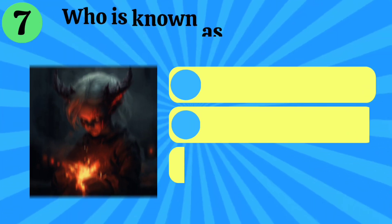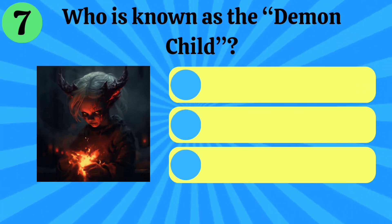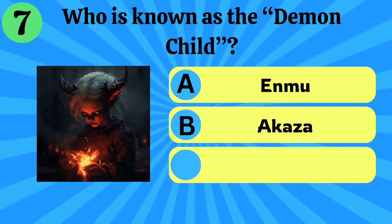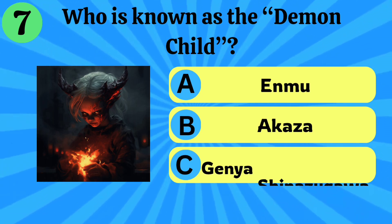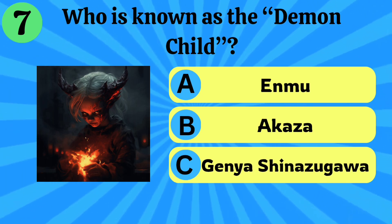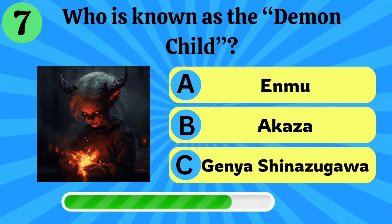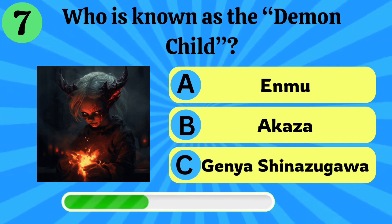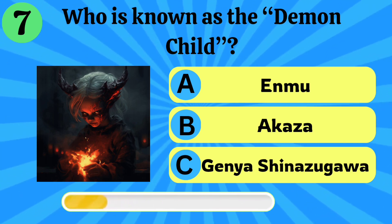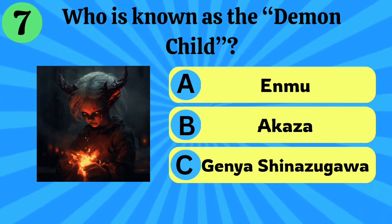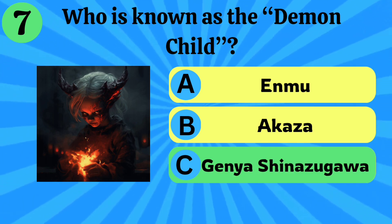Number 7. Who is known as the demon child? Enmu, Akaza, or Genya Shinazugawa? The right answer is Genya Shinazugawa.